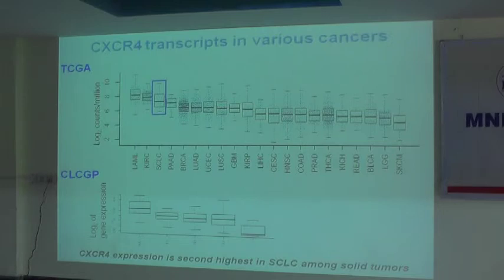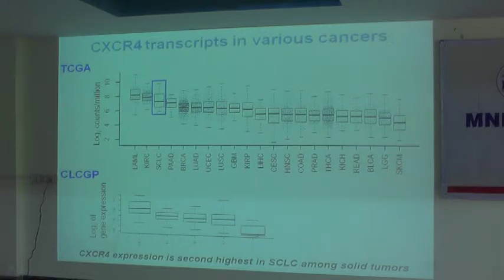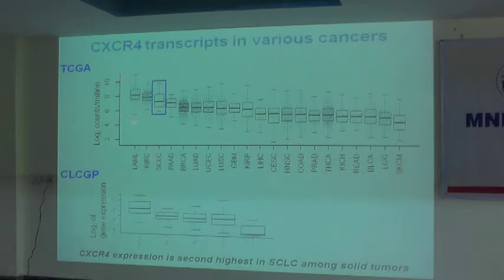Tumors from patients were genetically analyzed and deposited into public databases — several thousands of tumor genetic data. We extracted data for CXCR4 expression across these cancers and looked at what happens to CXCR4 in human tumors. We observed that, other than liquid tumors, among solid tumors other than kidney tumor, small cell lung cancer has the highest level of CXCR4 expression.